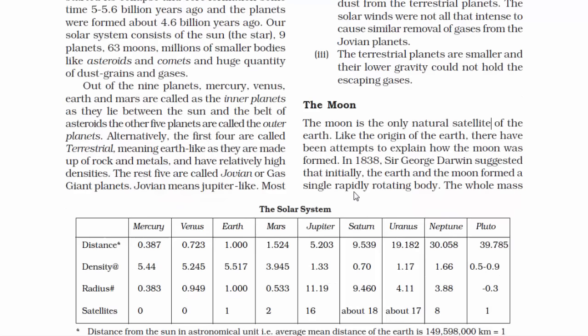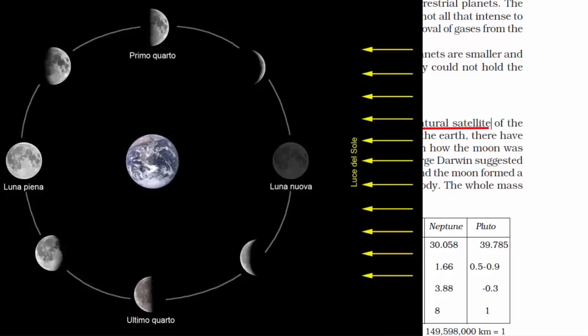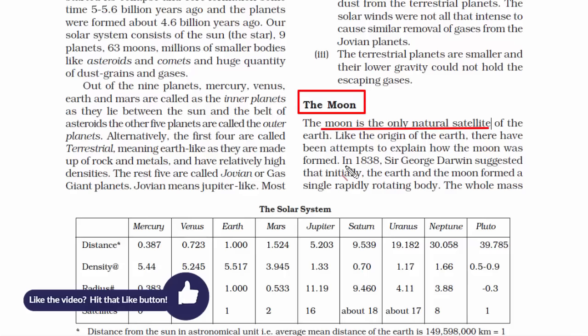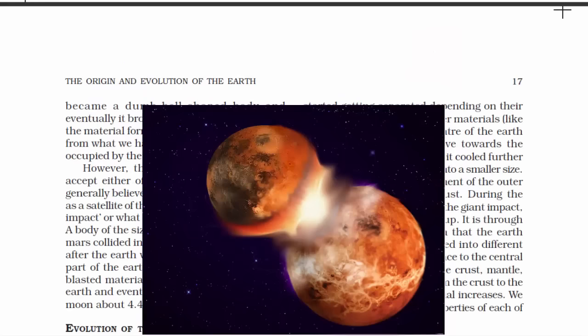The Moon is the only natural satellite of the Earth, meaning the Moon just revolves around the Earth. There is a theory behind how the Moon was formed. In 1838, Sir George Darwin suggested that the Earth and the Moon were combined — joined together in a dumbbell shape.